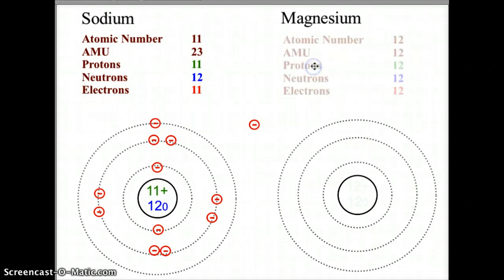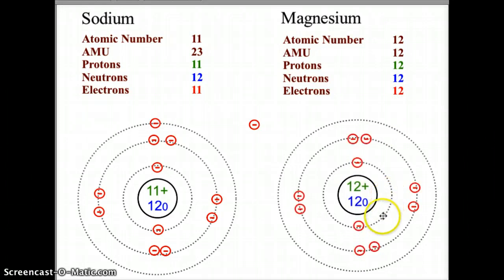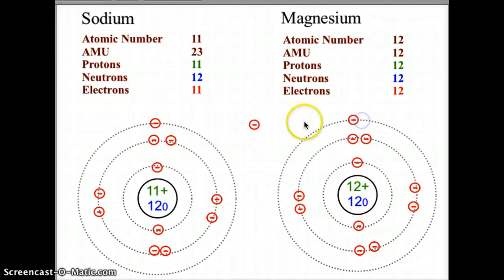When we look at magnesium, we have atomic number 12 and an AMU of 24, giving us 12 protons, 12 neutrons, and 12 electrons. That gives us 12 protons and 12 neutrons in the nucleus, two electrons in the first orbit, eight in the second orbit, and we need to add two more electrons to the next orbital level, bringing the total to 12 electrons.